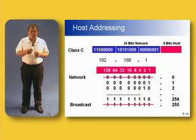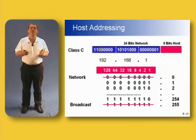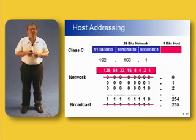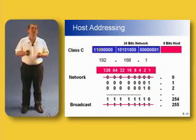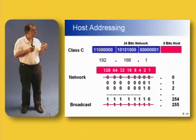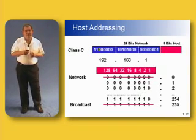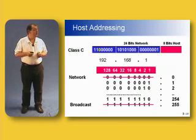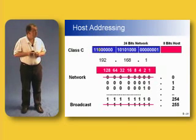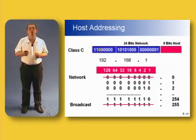If we send anything to an address where the host portion is set to all ones, the packets go to every device on that particular network. So all ones in the host portion means the broadcast address. That gives us an available range of addresses from 1 up to 254 with our class C address. We've taken away two of the available addresses: the all zeros address and the all ones address.